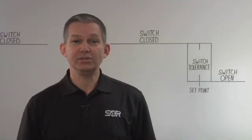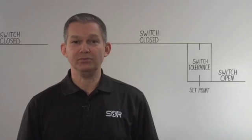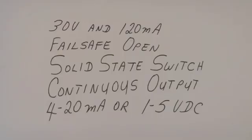So, let's summarize the principal features of the 805QS. It offers a configurable solid state switch that is rated to 30 volts and 120 milliamps with an accuracy of plus minus 2% of the upper range limit. In consideration of the set point tolerance, SOR recommends the use of latching logic in conjunction with the 805QS.